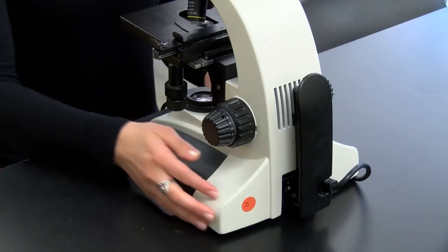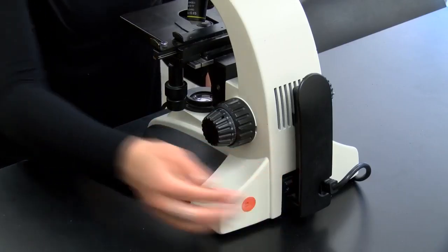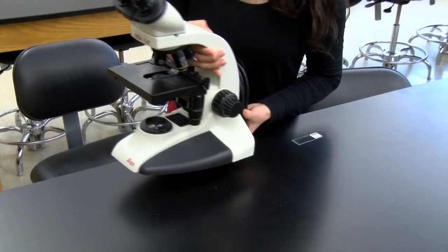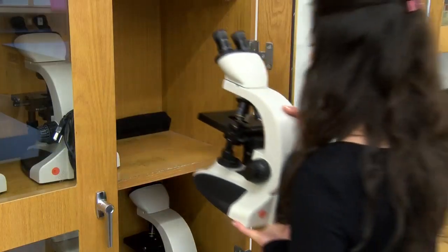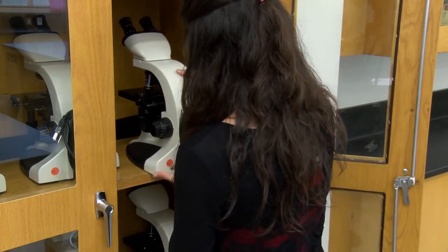Turn off the light and power and wrap the cord. Carry the microscope with both hands back to the cabinet. Be sure that the arm is facing out and that the microscopes are not crowded together.